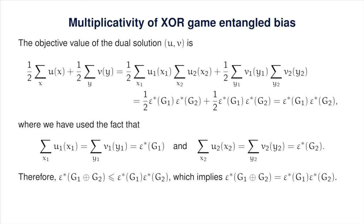The objective value achieved by this solution is the product of the entangled biases of G₁ and G₂. Combined with the known lower bound, the entangled bias of G₁ XOR G₂ equals the product of the biases. Applying this fact iteratively, the entangled bias of the XOR of any collection of XOR games equals the product of the individual entangled biases.